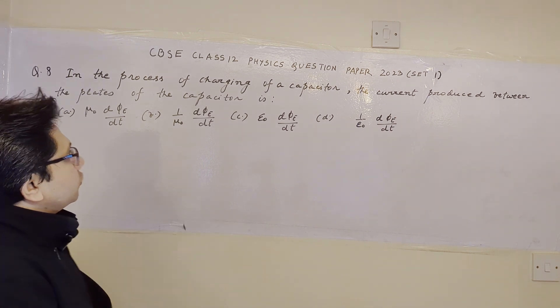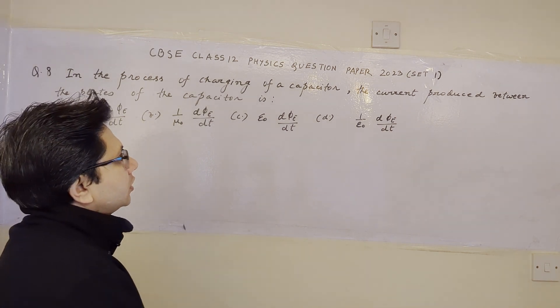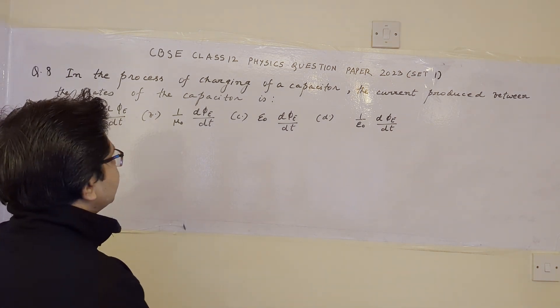Now the question is, in the process of charging of a capacitor, the current produced between the plates of a capacitor is